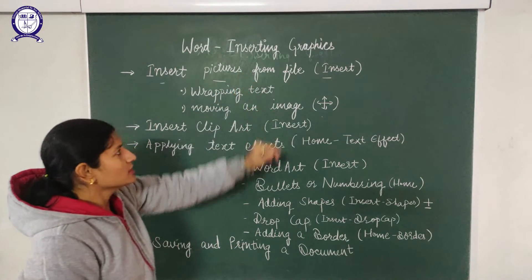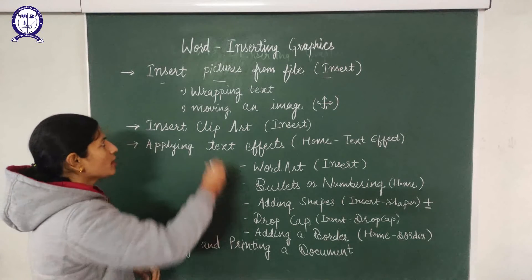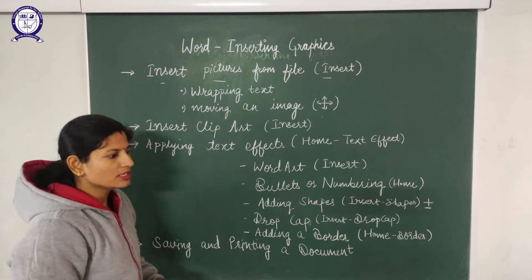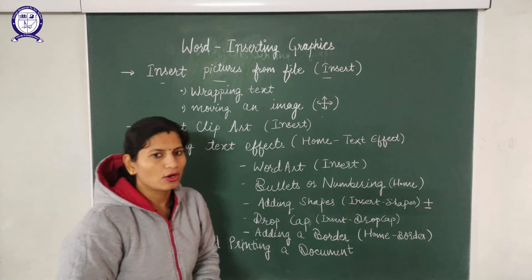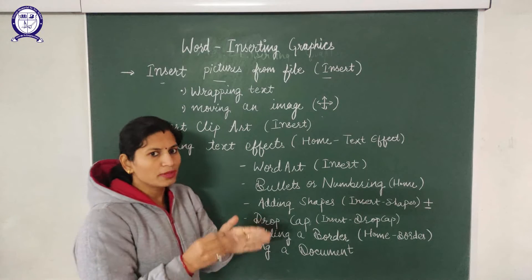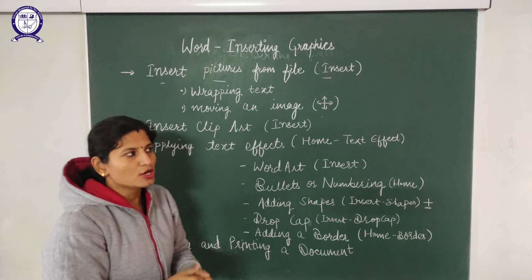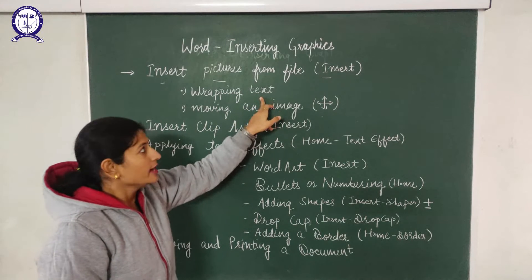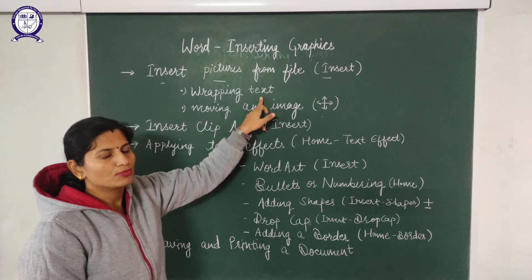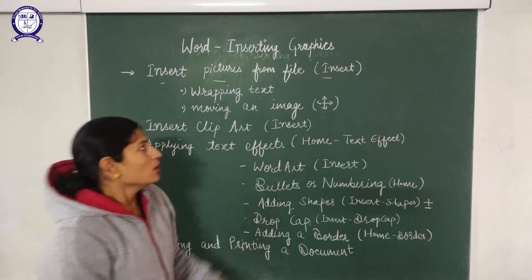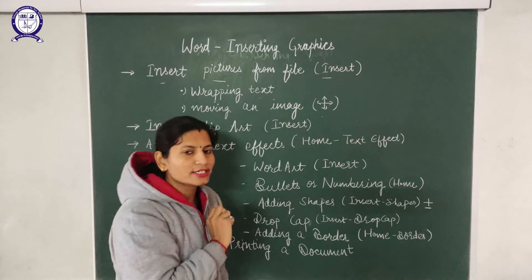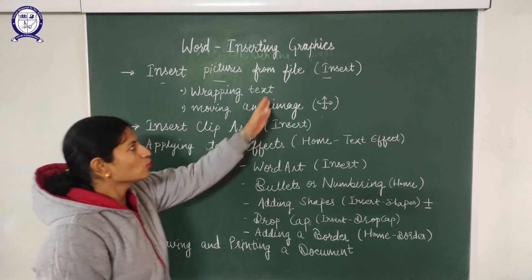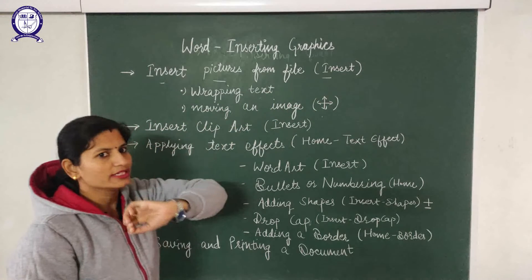After inserting the picture, there are two features to talk about: wrapping text and moving an image. Wrapping text means when you have inserted a picture or any object in your document, you need to adjust how the text appears near that object. Wrapping text is a feature that helps you adjust the text near the object or images accordingly. Select the image and after selecting it, you will see many options.